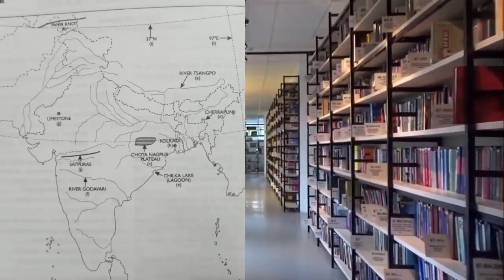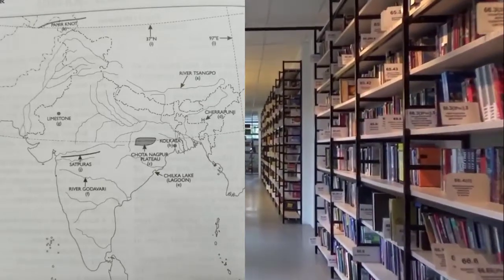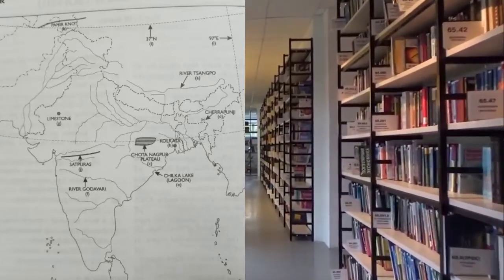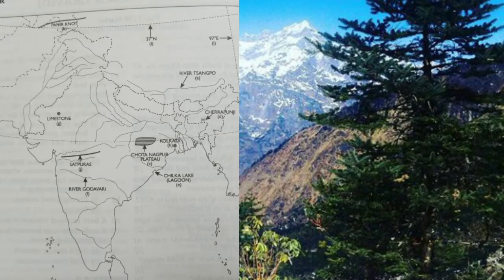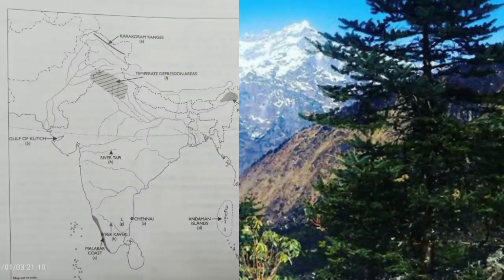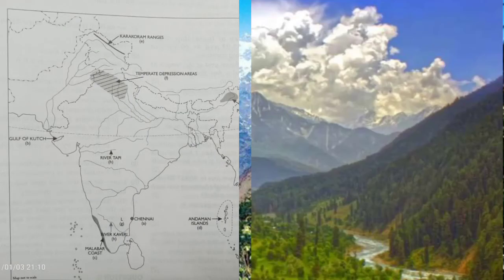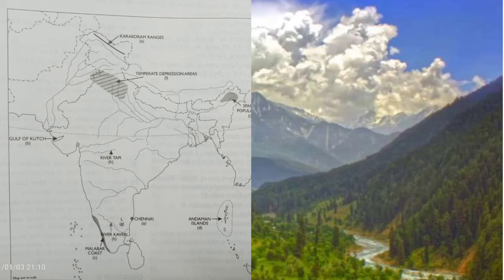'G' — mark and label an area of limestone in India. 'H' — the capital of West Bengal. Mark the 37 degrees North latitude and 97 degrees East longitude. 'I' and 'J' — mark with a bold line the Satpura Range.